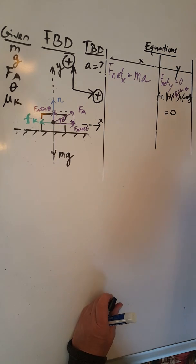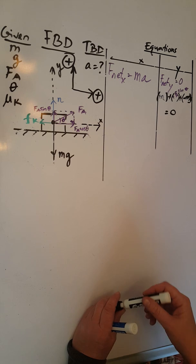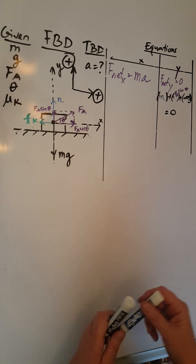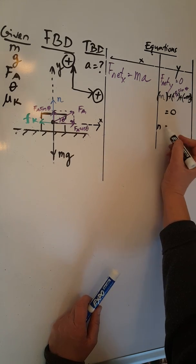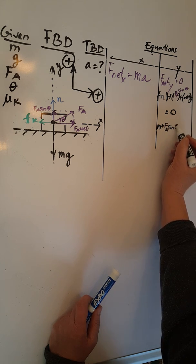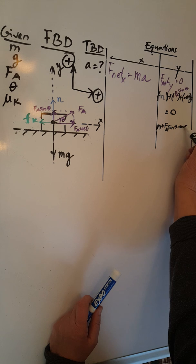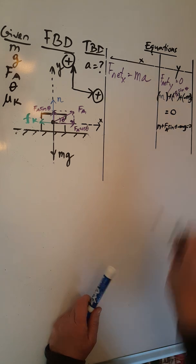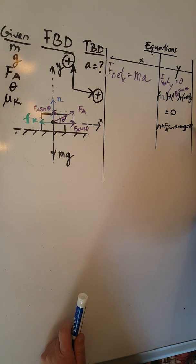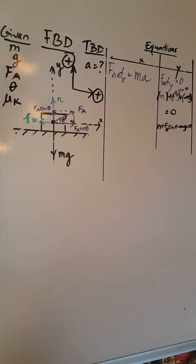When I simplify this equation, I'm going to end up having the following: N plus FA sine theta minus Mg equals zero. And that is my equation for the y-axis.